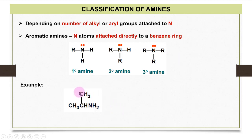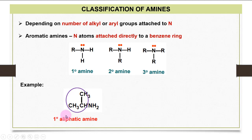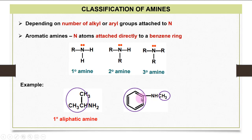Looking at examples, focus on where the nitrogen is. If nitrogen is attached to one carbon — one alkyl group — this is a primary aliphatic amine. If it doesn't attach directly to an aromatic ring, we classify it as an aliphatic amine. In another example, nitrogen has two carbon neighbors, so it is a secondary amine. Because nitrogen is attached directly to benzene, it is a secondary aromatic amine.